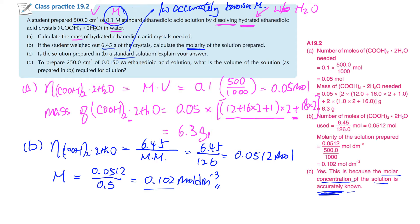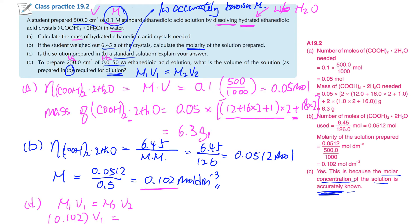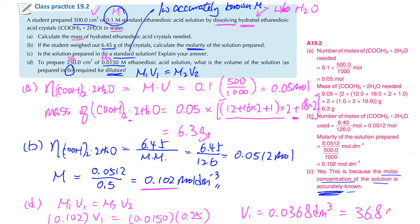And then part D: to prepare 250 cm³ of 0.015M ethanedioic acid, what is the volume of the solution prepared in B that is required for dilution? Using M1V1 = M2V2, M1 is 0.102 and you don't know the volume. M2 will be 0.0150 and V2 will be 0.25. Solving, V1 will be 0.0368 dm³, which means you roughly need 36.8 cm³.